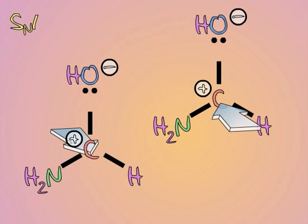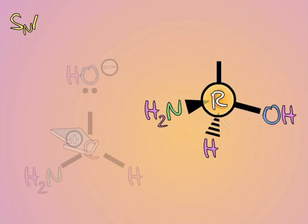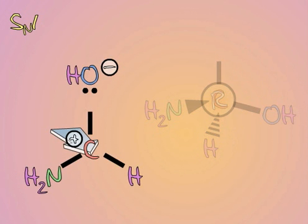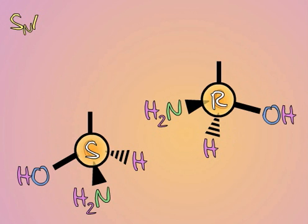When this nucleophile happens to attack from this side, we get the R enantiomer. But it could just as easily attack from the other side, giving us the S configuration. We get both the R and S configurations.